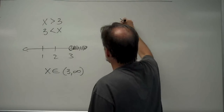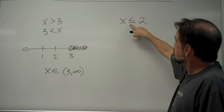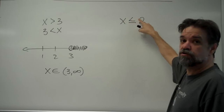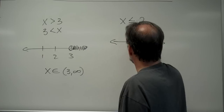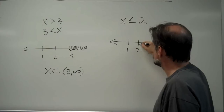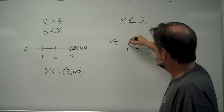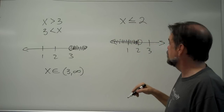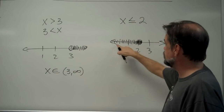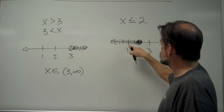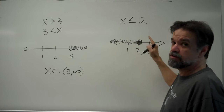What if we have x is less than or equal to 2? The little line underneath says it can be either less than 2 or equal to 2. On the number line we put a circle around the 2, and since x is less than, we shade the left side. Since it can also be equal, we fill the dot in. So x can be 2, 1, 0, anything negative, or 1.8, 1.9, 1.999999 — just nothing greater than 2.